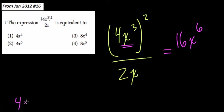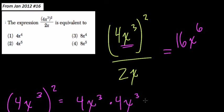Well, let's just take a look at that. That's (4x³)², right? And that equals 4x³ times 4x³. If we shuffle this around, we get 4 times 4 times x³ times x³.